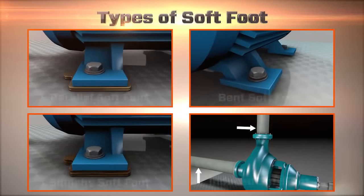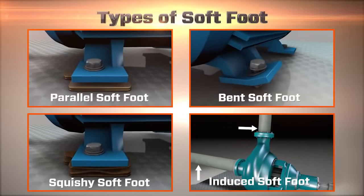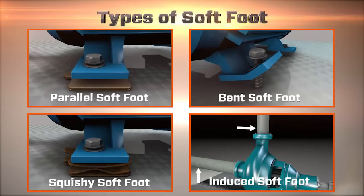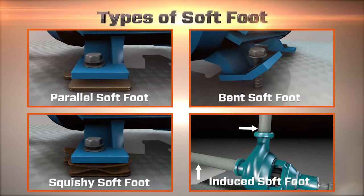There can be many different causes for machine frame distortion, which are diagnosed as different types of soft foot for the purpose of correcting this distortion. All of these conditions cause the machine frame to distort.